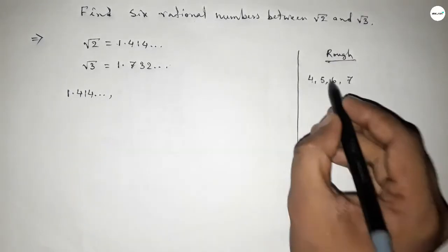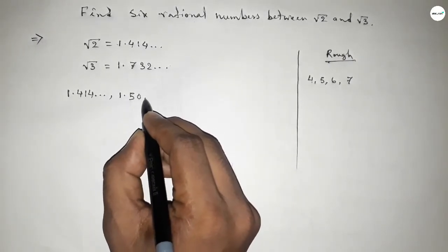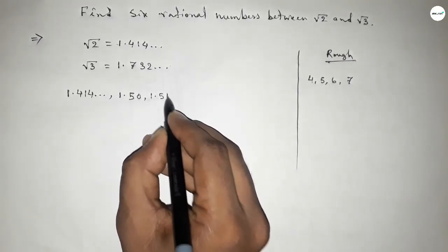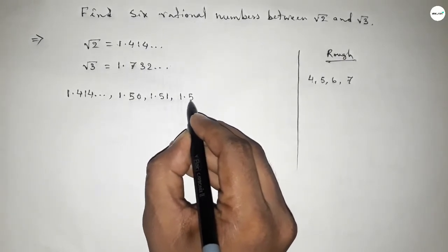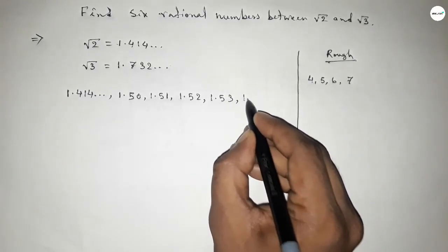So we can write six rational numbers this way. Taking five: one point five zero, next one point five one. You can take another way, six: you can write one point six zero, one point six one. Here I am taking the 1.5 series through 1.55.